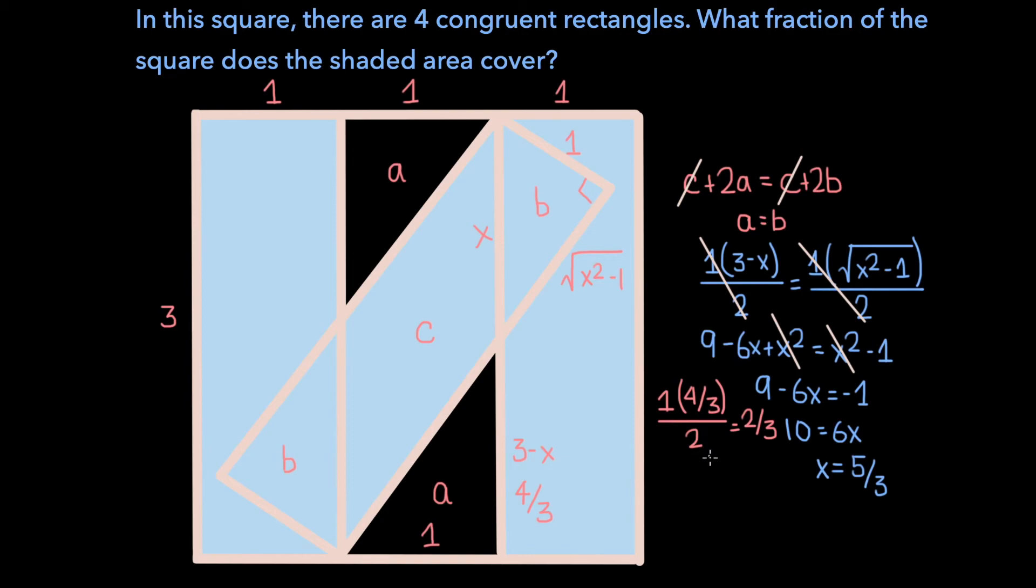And so now to find what fraction of the square the shaded area covers, we know that the entire square has an area of 3 times 3, or 9, and that the shaded region's area is 9 minus the area of these two identical triangles, each of which have an area of 2 thirds.